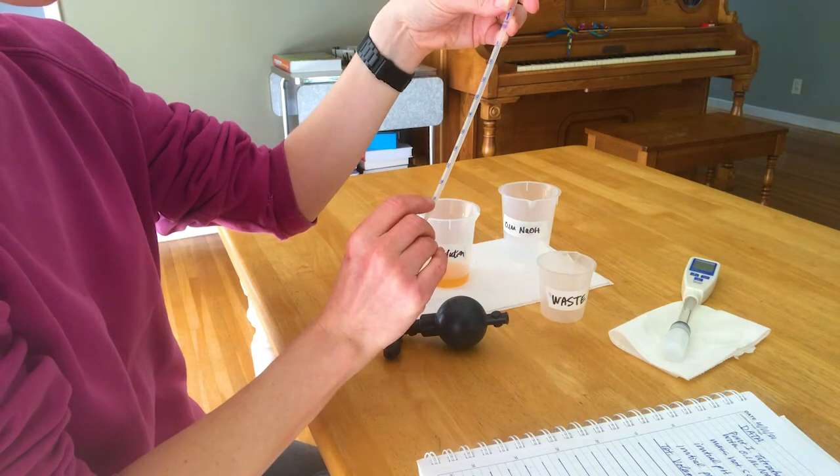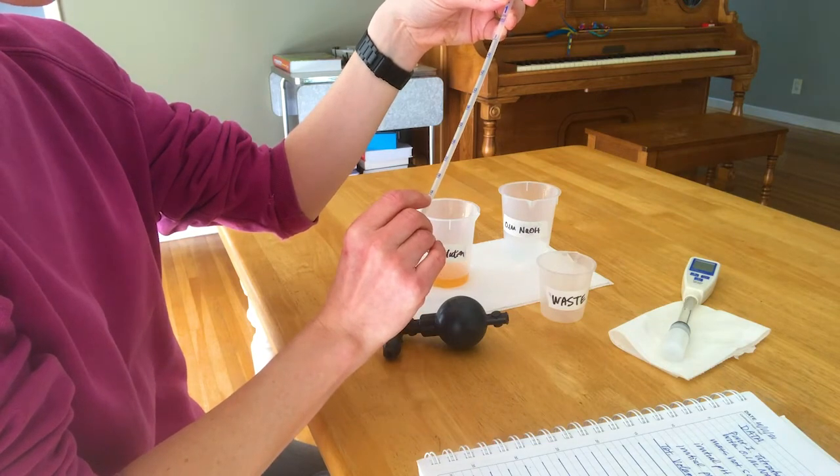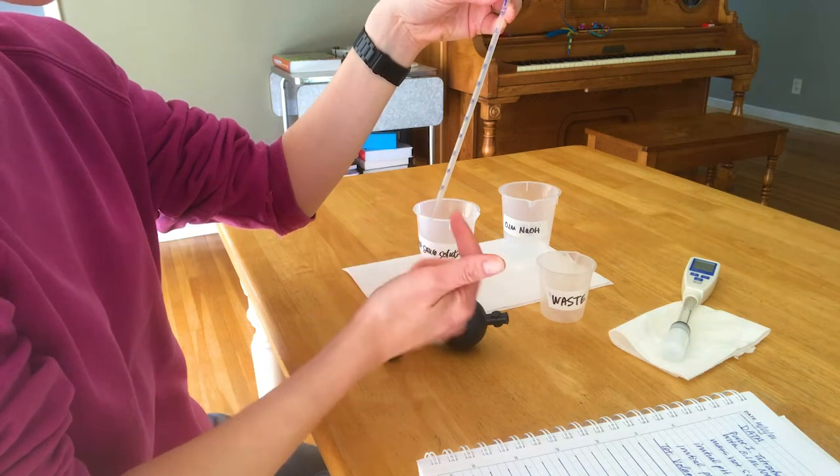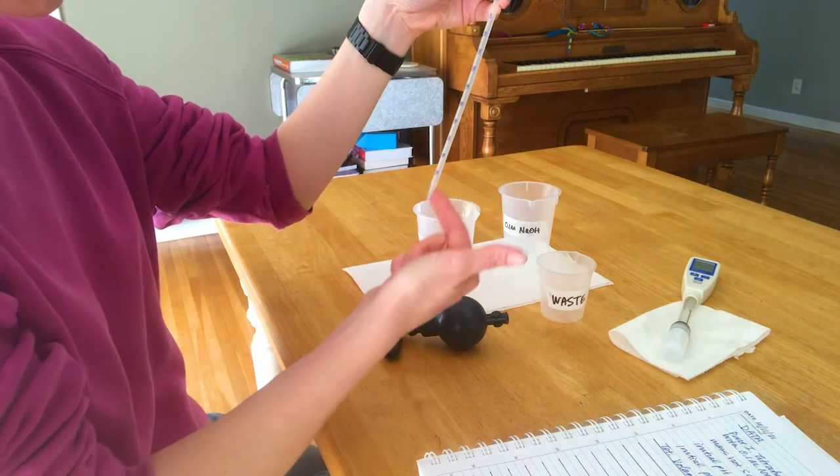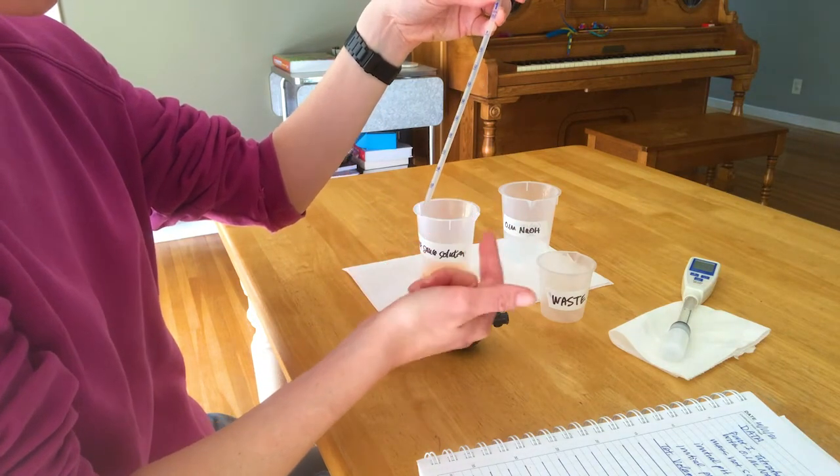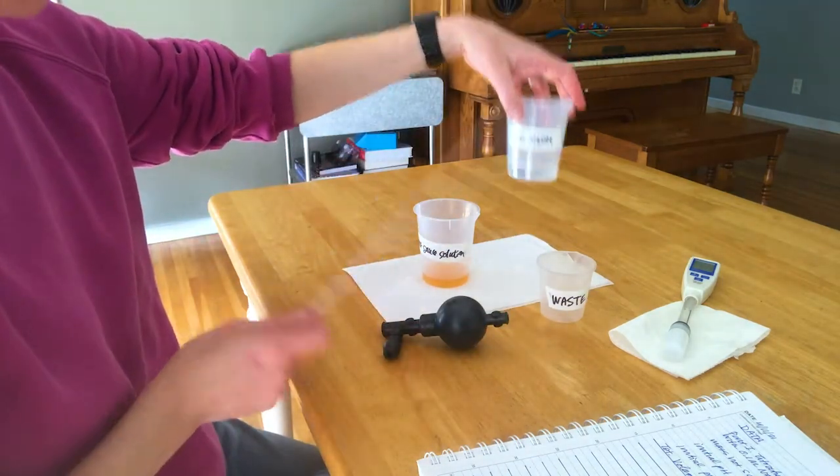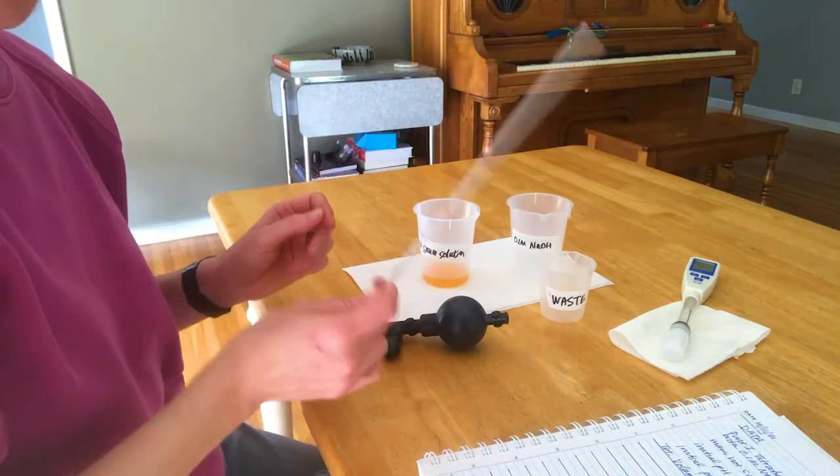Most graduated pipettes, the bottom mark would be the final volume, for example, 1 milliliter. So you would only want to dispense to that mark and not let it drain all the way. However, this one, the last mark is 0.9 milliliters. So you would want to drain it all the way if you wanted to add 1 milliliter of sodium hydroxide to the hot sauce solution.